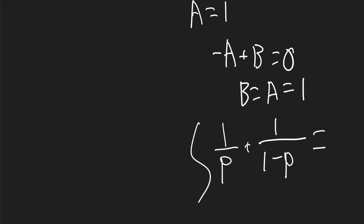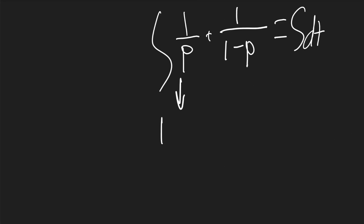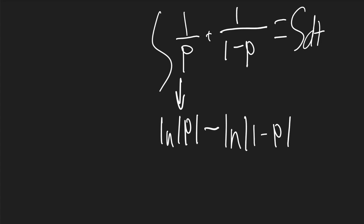So it'll be 1 over p plus 1 over (1 - p). Taking that integral equal to the integral of dt: this term becomes ln|p| and this one becomes negative ln|1 - p|, it's negative because of the chain rule with the p being negative.